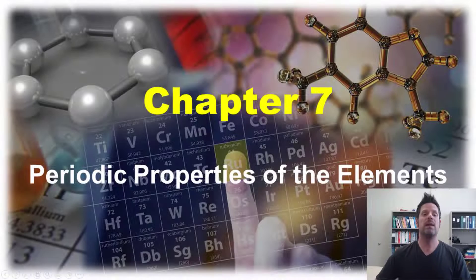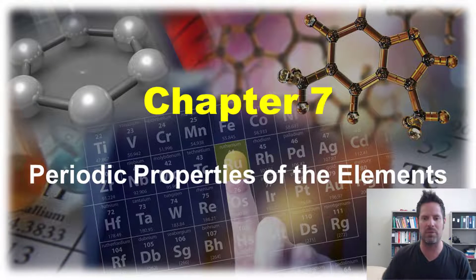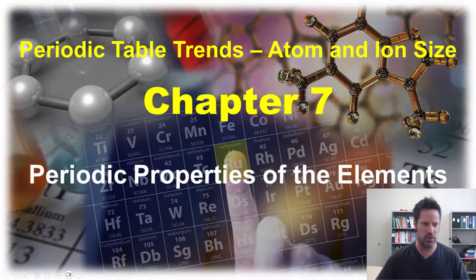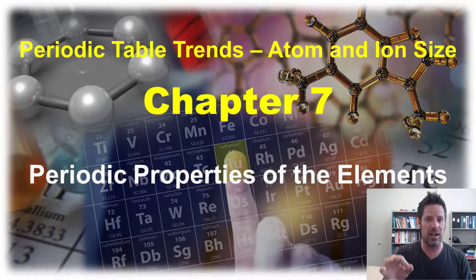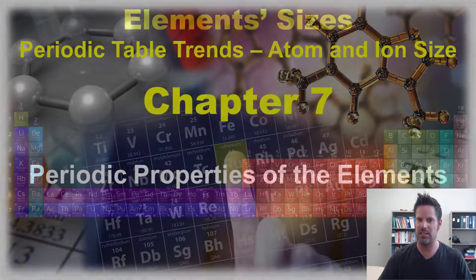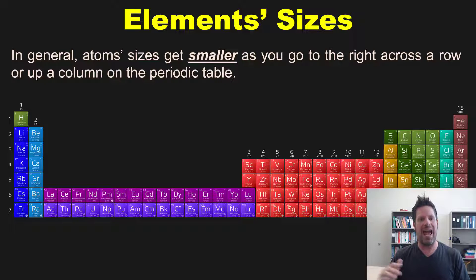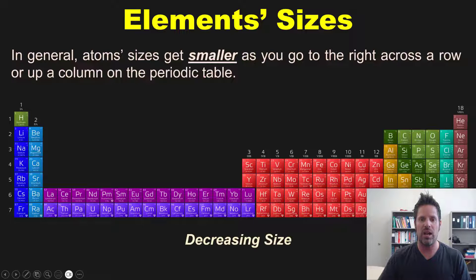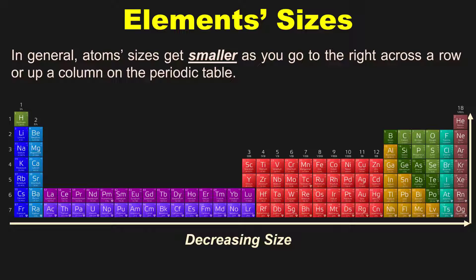In this video on periodic trends, periodic properties of the elements, I'm going to teach you about atoms and ions individual sizes. In general, atom sizes get smaller as you go to the right across a row or up a column on the periodic table. Therefore, francium is the largest element and helium is the smallest.